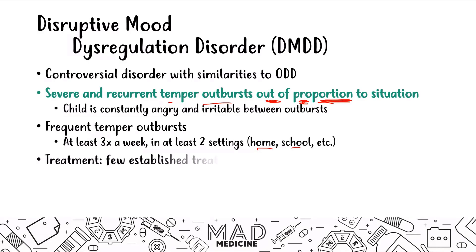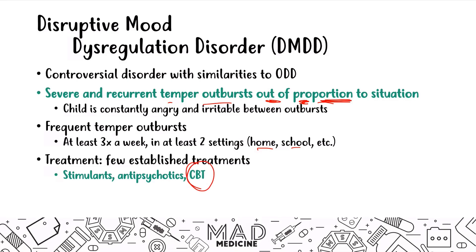The treatment for DMDD is going to be either stimulants or antipsychotics, but the mainstay first-line treatment is going to be CBT — cognitive behavioral therapy. This is one of the disorders where you can give drugs early on, but you want to first start off with behavioral therapy. If that doesn't work, then you can move forward with the drugs.